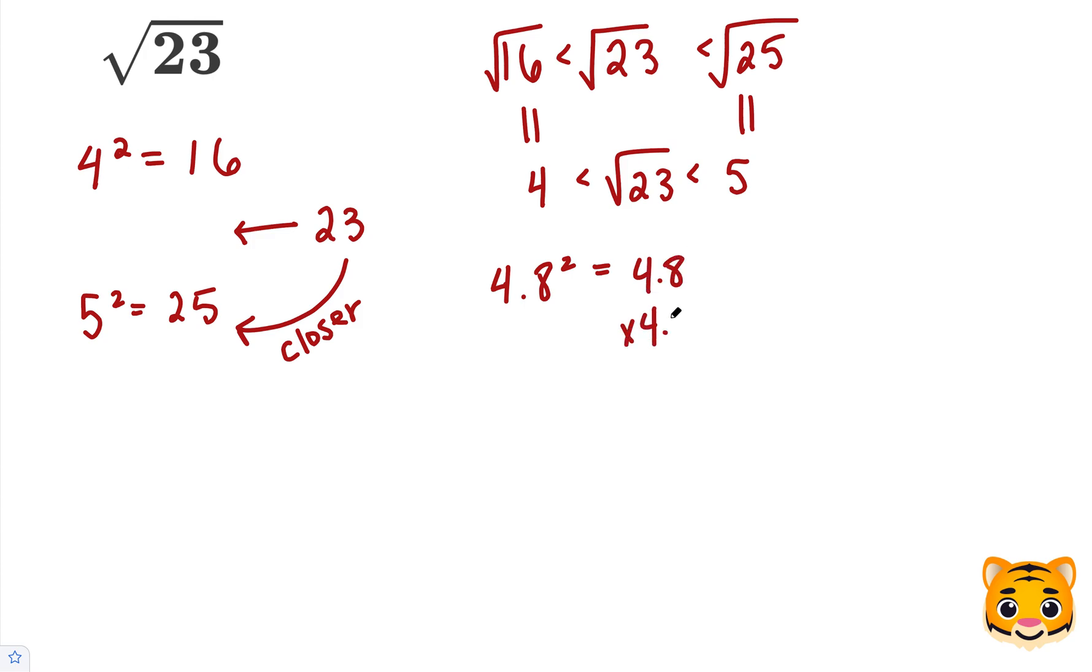4.8 squared is 4.8 times 4.8. 8 times 8 is 64, carry the 6. 4 times 8 is 32, plus 6 is 38. Now add our 0. 4 times 8 is 32, carry the 3, and then 4 times 4 is 16, plus 3 is 19.